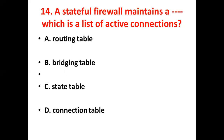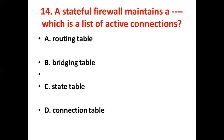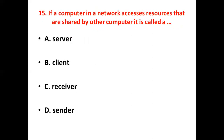Thirteenth bit: What is one advantage of setting up a DMZ with two firewalls? Option A: you can control where traffic goes in three networks. Option B: you can do load balancing. Option C: you can do stateful packet filtering. Option D: improved network performance. Answer: Option B, you can do load balancing.